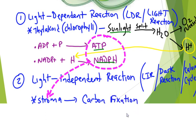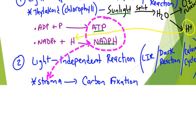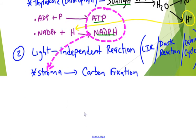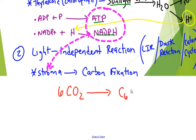What is happening in the stroma is carbon fixation — we are modifying our carbon compounds. What we have left over is our 6CO2, and through a series of reactions, this is going to become C6H12O6. It is going to be powered by the ATP and NADPH from reaction number one.